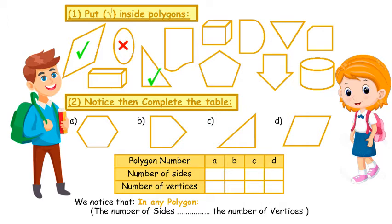This is a polygon — closed shape and no curves in it. It's a polygon. No curves and closed. This is a polygon. No curves and closed. This is a polygon. No curves and closed. And this is a polygon too.